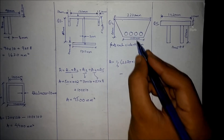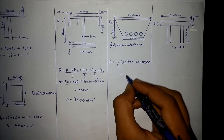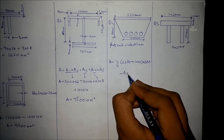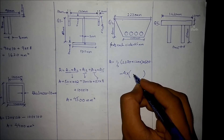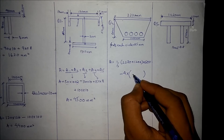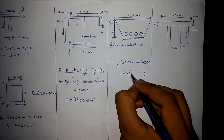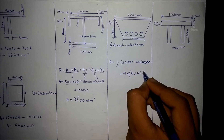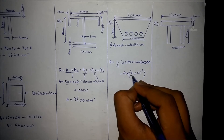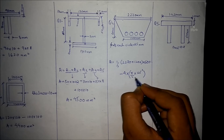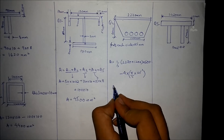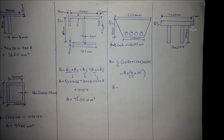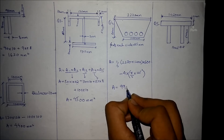Now we subtract the area of the void circles. There are four void circles, and the area of each circle is π × diameter² / 4, which can be written as 0.25 × π × diameter². Multiplying the single circle area by 4 and subtracting, the final area comes out to be approximately 9910 mm².